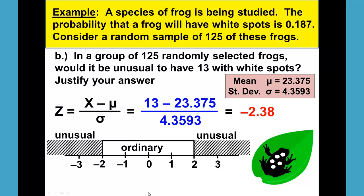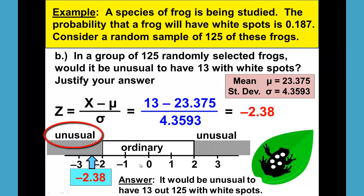Where would that fall in our ordinary and unusual chart? Well, that is more than two standard deviations below the mean. It is less than negative 2 and therefore would be unusual. It would be unusual to have 13 out of 125 with white spots.